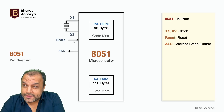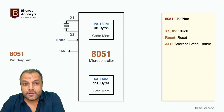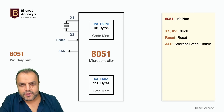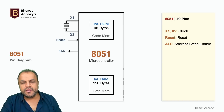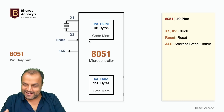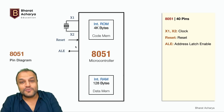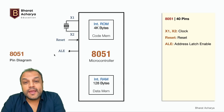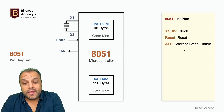Pay attention to signal directions. It's very concerning to see a student draw a wrong direction in an exam — it pretty much shows the student has just memorized the signal without understanding it. If you understand the signal it's next to impossible to draw the wrong direction. Does 8051 reset us, or do we reset 8051? We reset 8051 — so that arrow points inward.